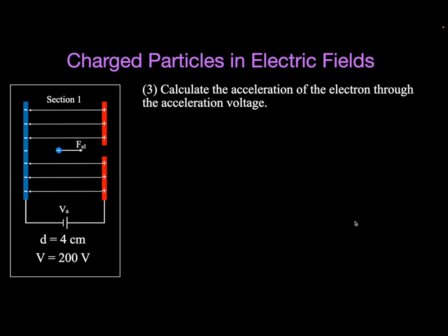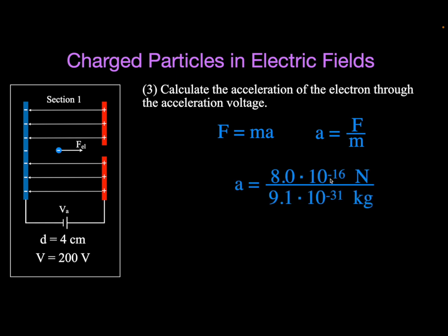Now we can get the acceleration of the particle. The acceleration comes from Newton's second law: acceleration equals force divided by mass. The force we just calculated is 8 times 10 to the minus 16 newtons. The mass of the electron is 9.1 times 10 to the minus 31 kilograms — you can look that up. Therefore the acceleration is 8.79 times 10 to the 14 meters per second squared.